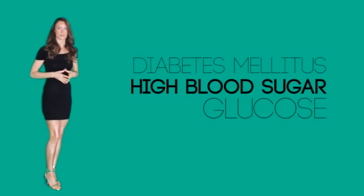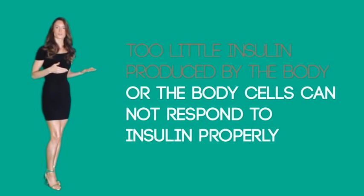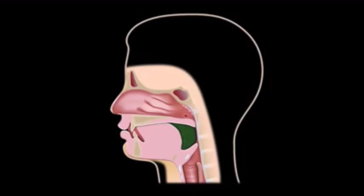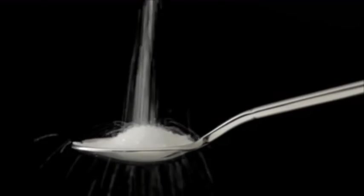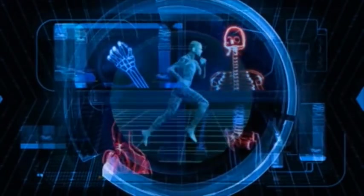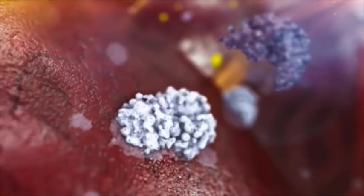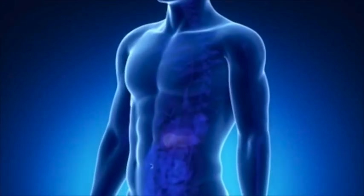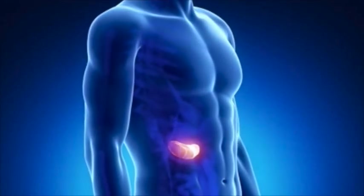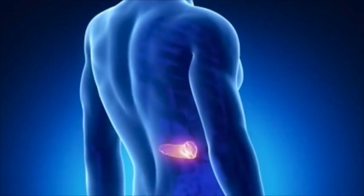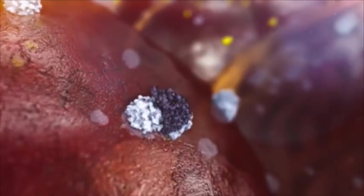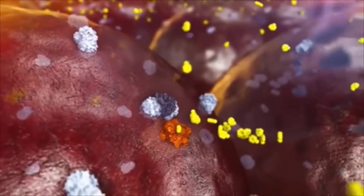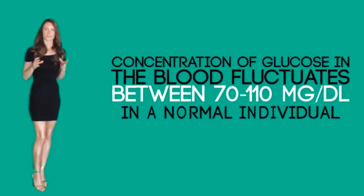Metabolic disorders associated with high blood sugar and glucose are collectively known as diabetes mellitus, abbreviated as DM. Reasons for high blood sugar can be too little insulin produced by the body, or the body's cells cannot respond to insulin properly, or a mixture of both. Most ingested food is broken down into sugar known as glucose, which goes into the bloodstream and acts as the major source of energy, allowing body cells to grow and sustain.